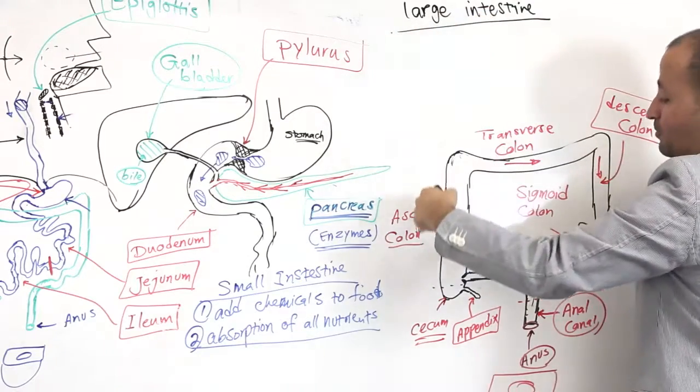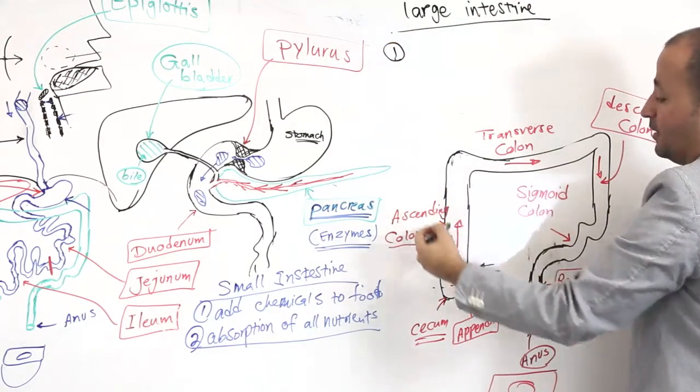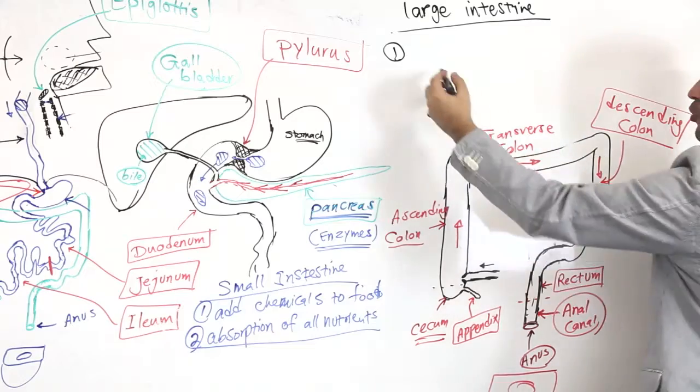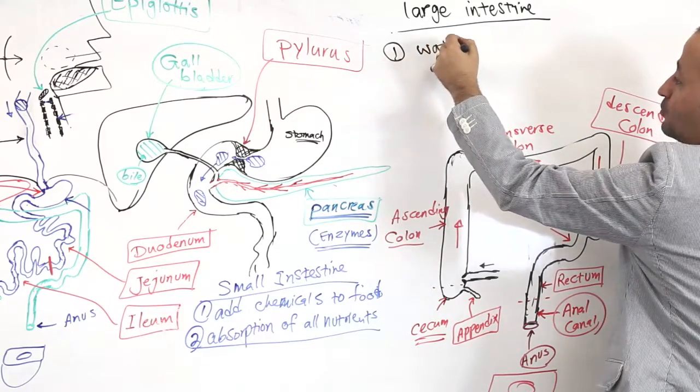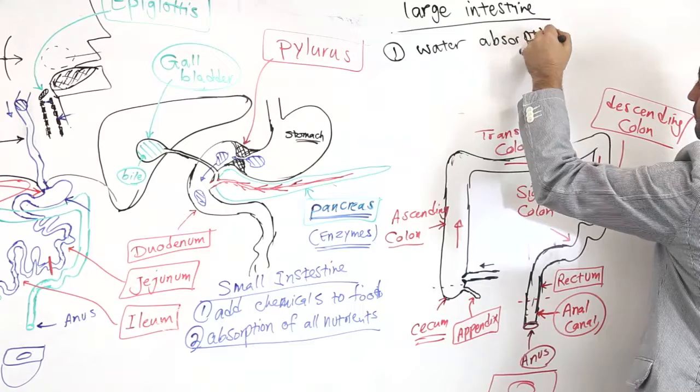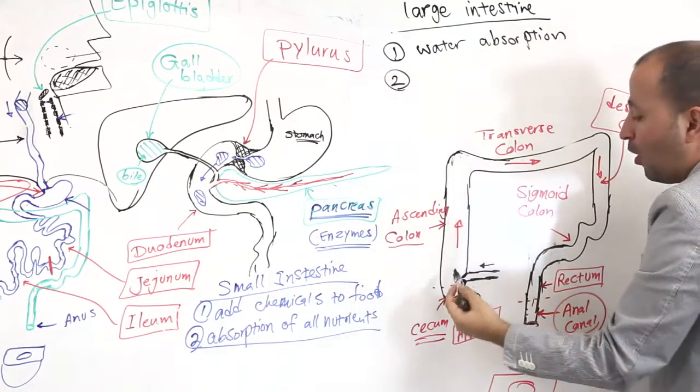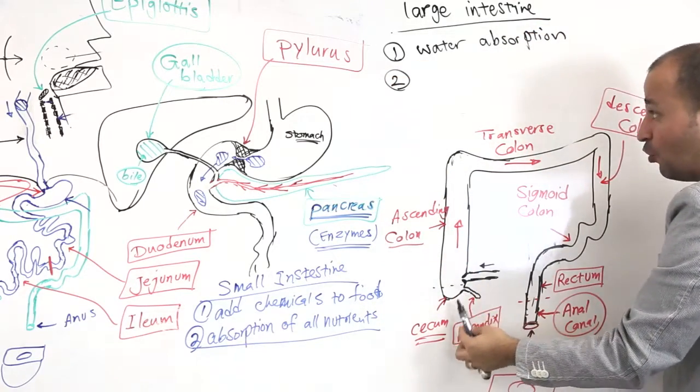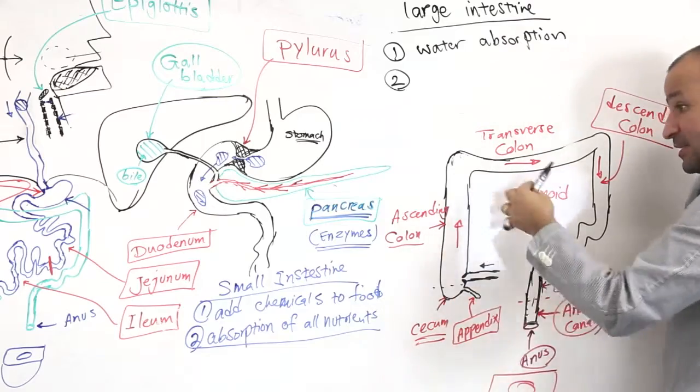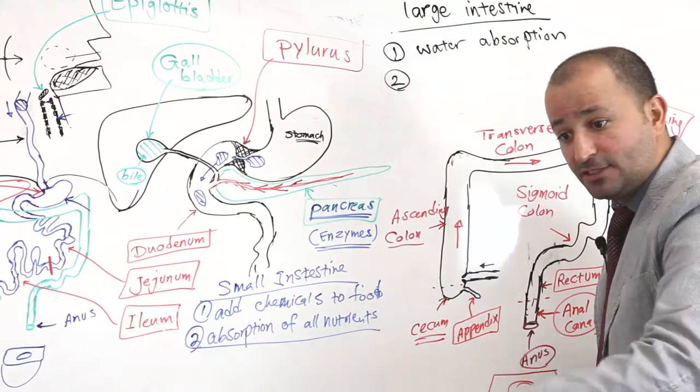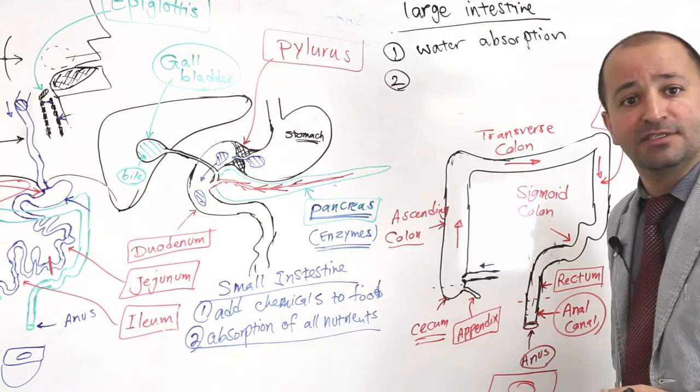So the large intestine, the jobs are, number one is what? Is absorbing water, right? Water absorption. What is the other one? What's the other job? This water absorption, after the feces is formed, you continue to get rid of the feces.